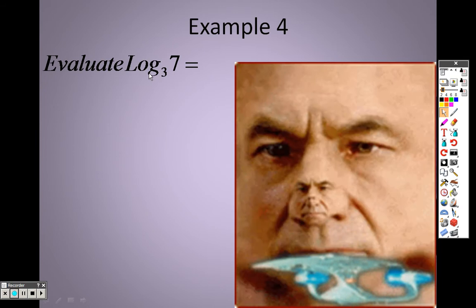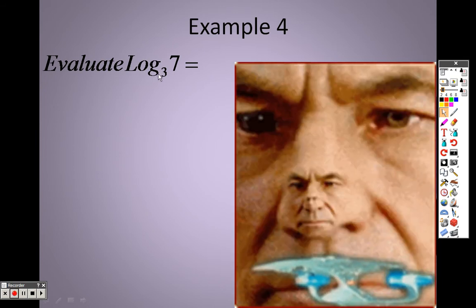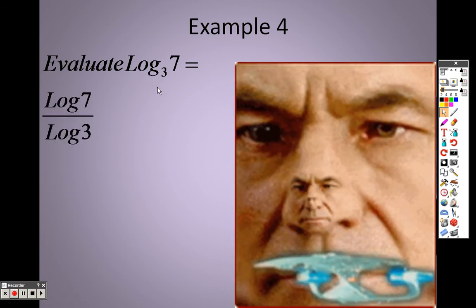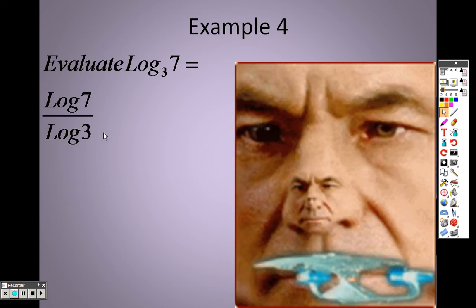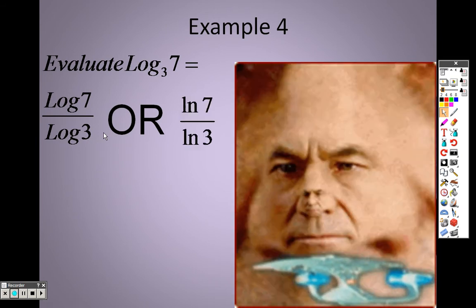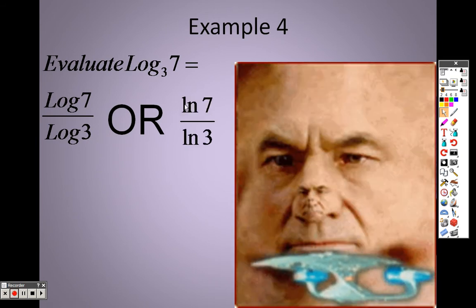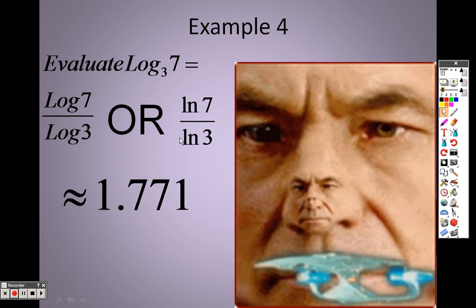So with example 4, if you were to use a calculator on this, basically when you'd write on your calculator, you would do log 7 over log 3. So log 7 divided by log 3, and you would get your answer, or you could actually do the natural log of 7 over the natural log of 3. Either or will give you 1.771.